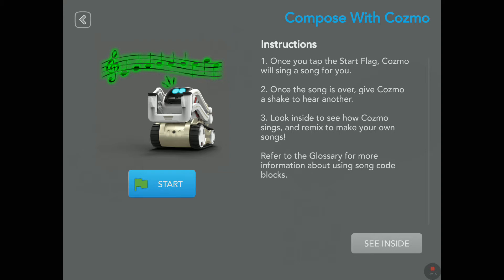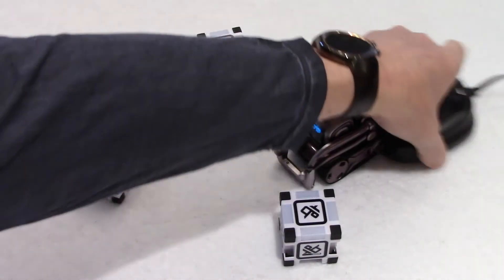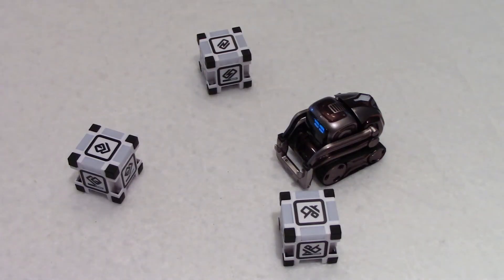Look inside to see how Cosmo sings and remix to make your own songs. First time that Enki put that in instructions actually, like your remix. You could do it before, but it's the first time that you actually see it. Refer to the glossary for more information about using sound code blocks. Perfect. So let me take the charger out of the way right here. I guess I'll keep my zoom at this level here.